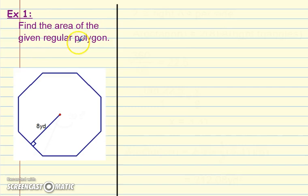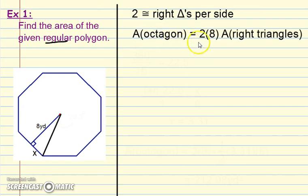First example, find the area of the given regular polygon. So it says regular. We know all the sides are congruent. And we're going to start off, and I'm just going to remember there's two right triangles per side. So I'm going to draw in my right triangle. I'm going to draw in my radius for my octagon. And I know I need to figure out this x part, because in our right triangle, the area of the right triangle is one-half base times height.